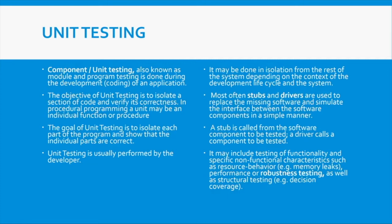You verify the correctness of that particular method or function — that it does what it should do — and you confirm it is in line with your coding standards. Depending on the context of your development lifecycle, you might want to isolate a part of the system and test it. Unit testing is basically done by developers.